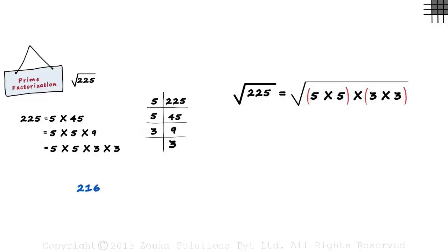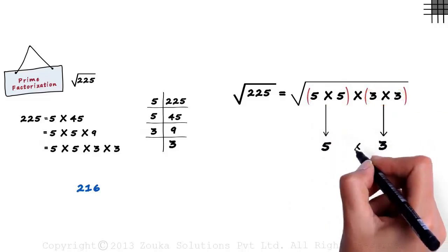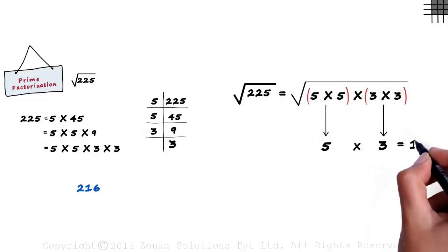Once we form pairs, to find the square root, all we have to do is pick one number from each pair and multiply them. So from the first pair, we pick 5. And from the second pair, we pick 3. And we multiply 5 and 3 which gives us 15.